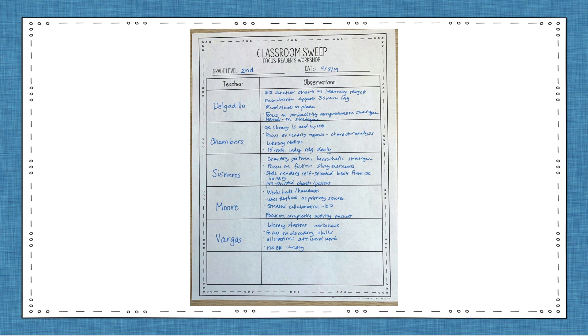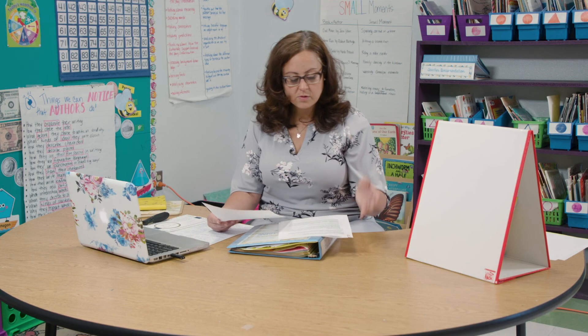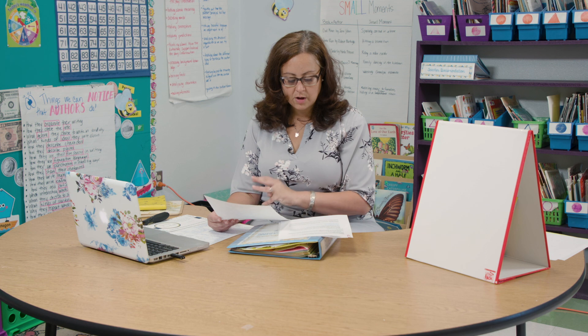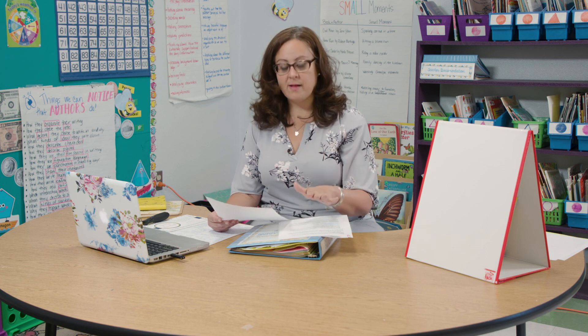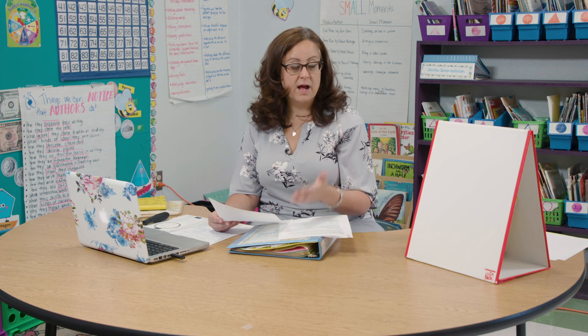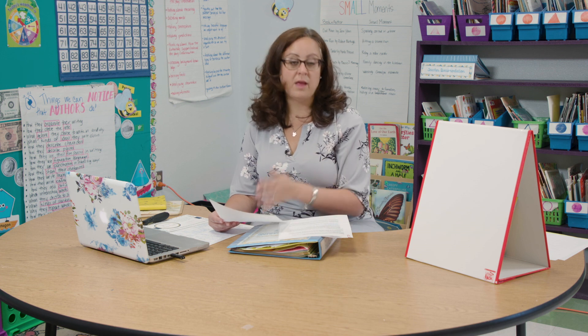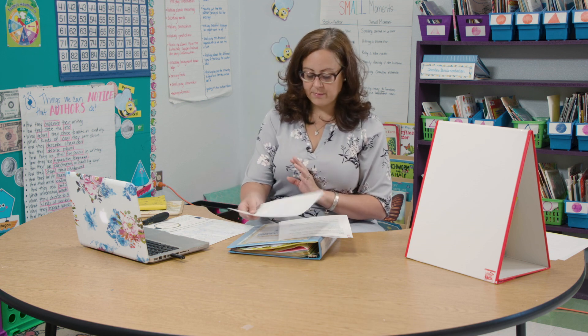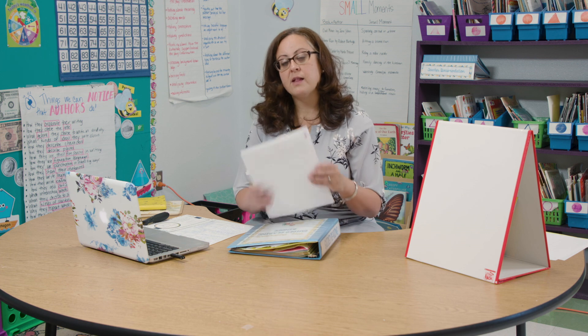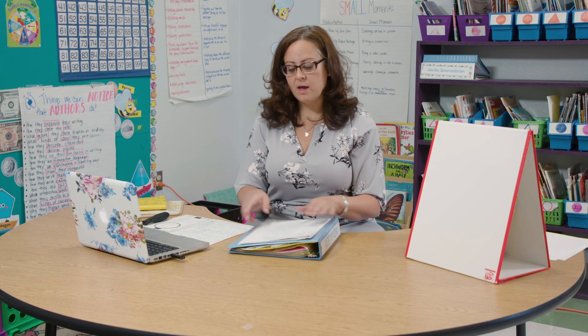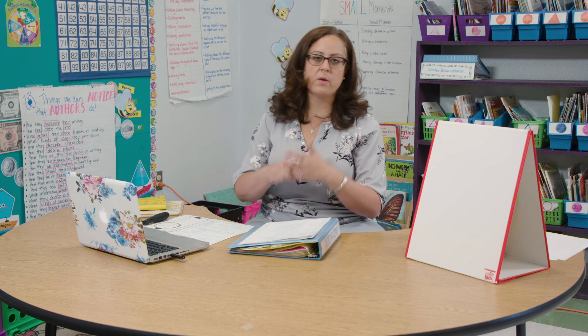I only saw independent reading in one or two rooms and it was for a very short period of time. So some things that we want to think about are: what is a mini lesson? What grade level standards are we asked to teach at certain times in the year? And how are we asking kids to respond to those? Are they doing handouts and just turning them in, or are they applying that learning into their own independent reading? What does that practice look like?